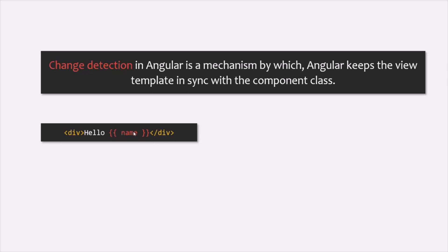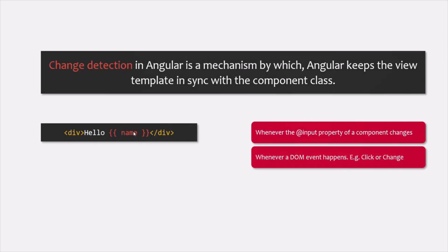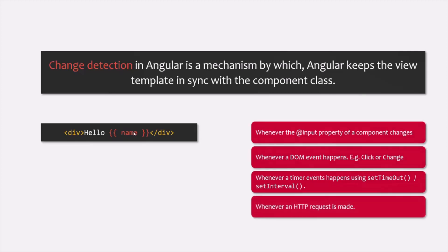But how does Angular know that the value of the name property has changed? What Angular does is it runs a change detection cycle on every event that happens on the DOM and in some other special scenarios which may result in a DOM change. For example, Angular runs the change detection cycle whenever the input property of a component changes, whenever a DOM event happens such as a click or change event, whenever a timer event happens using setTimeout or setInterval, and whenever an HTTP request is made.